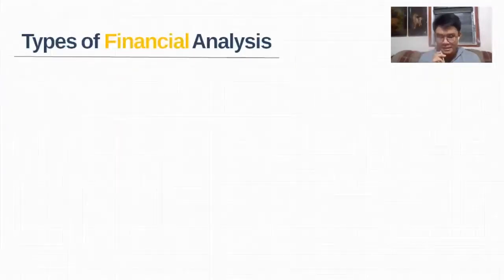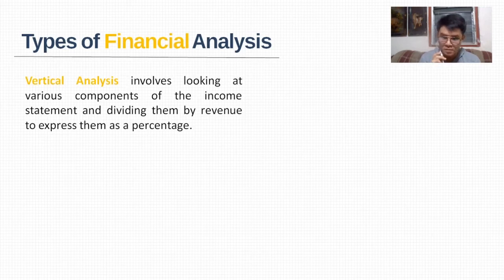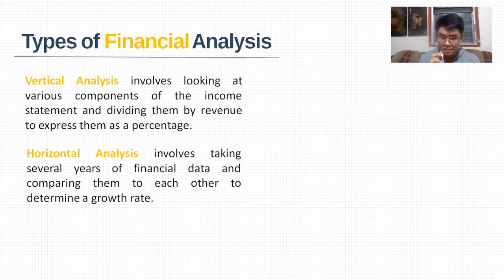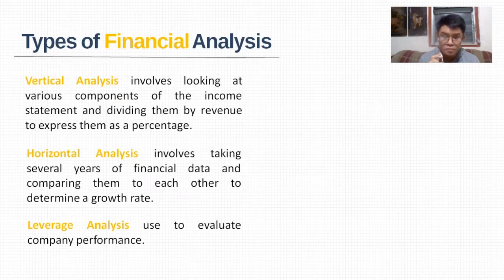Vertical analysis involves looking at various components of the income statement and dividing them by revenue to express them as a percentage. This process is also sometimes called a common-sized income statement, as it allows an analyst to compare companies of different sizes by evaluating their margins instead of their dollars. Horizontal analysis involves taking several years of financial data and comparing them to each other to determine a growth rate, helping an analyst determine if a company is growing or declining and identifying important trends.